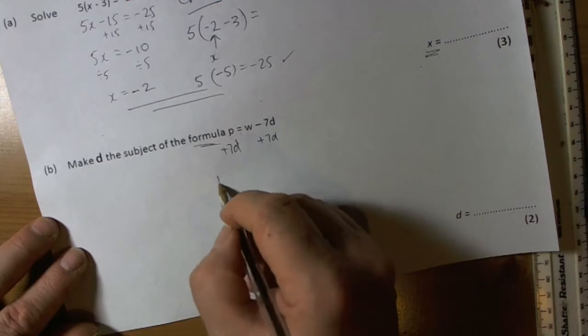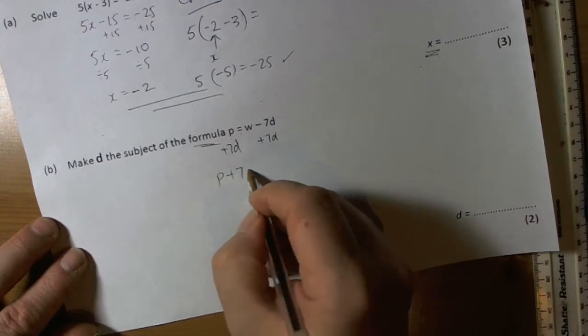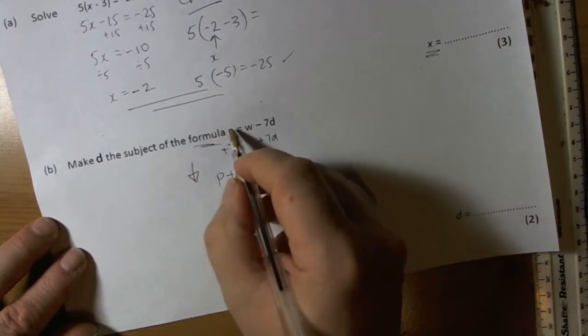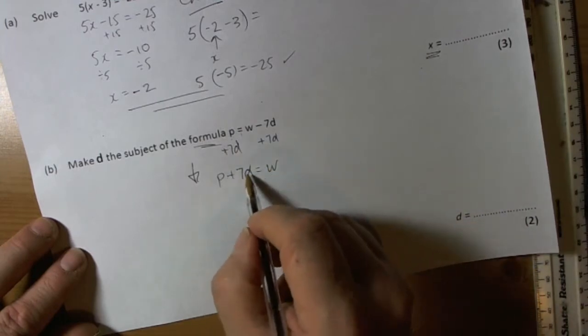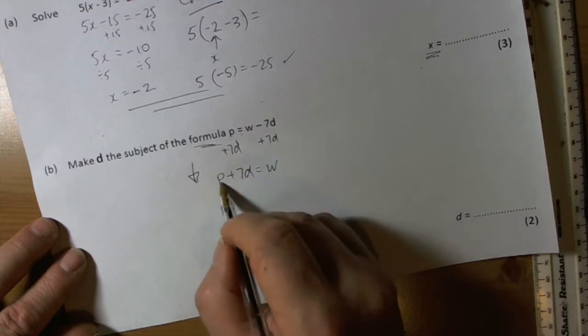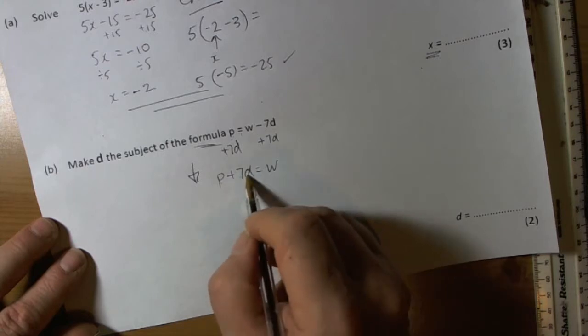So we end up with p plus 7d, that equals w. I've got d there positive, so that means I must move either the 7 or the p next. Now this has got the term with d in it, so I do all the terms without the subject letter first, so we're going to move the p.